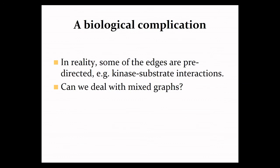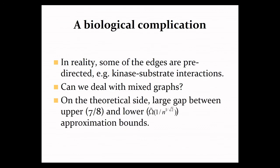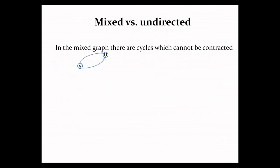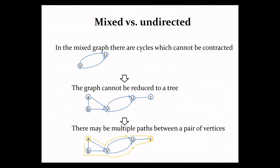For mixed graphs, it seems as though the problem actually becomes harder because, for example, the best known approximation algorithm for it is now sub-linear and not sub-logarithmic. And to give you an intuition why this is the case, know that in mixed graphs, there are cycles that are oriented in an acyclic manner so they cannot be contracted, which means that the graph cannot be reduced to a tree, which again means that for a given pair of vertices, there may be more than one path connecting them. So we cannot use the ILP that I just showed you.